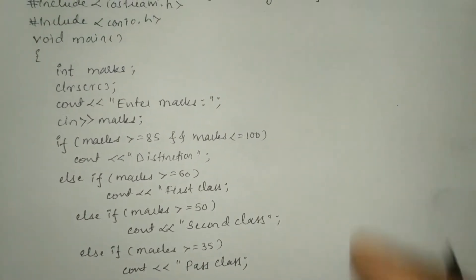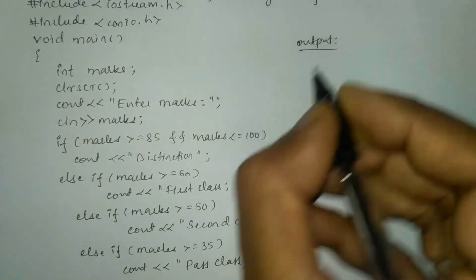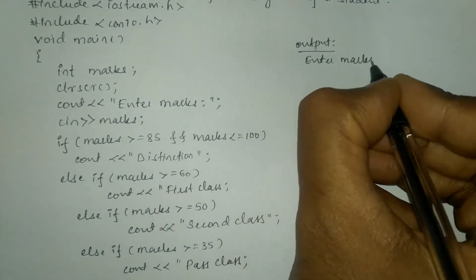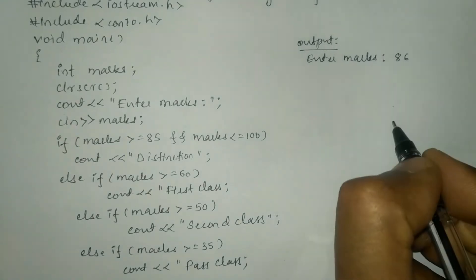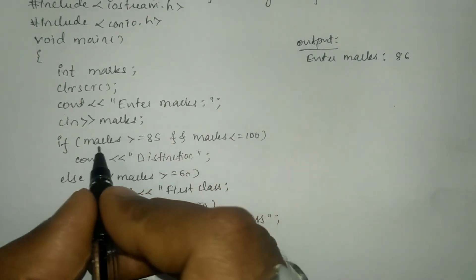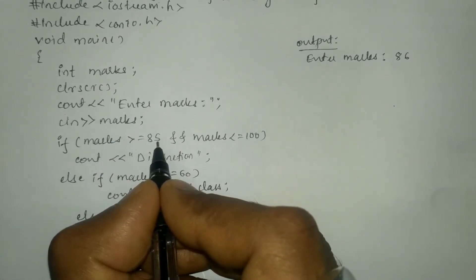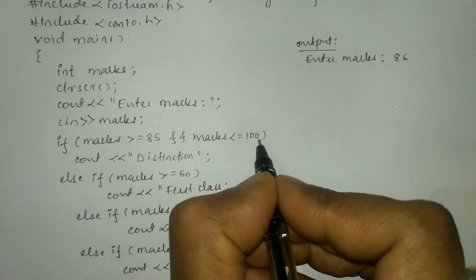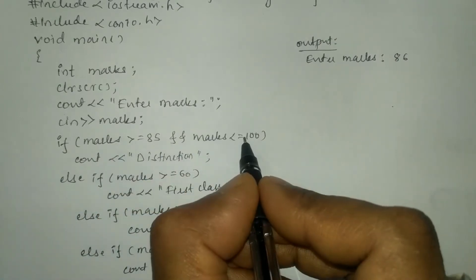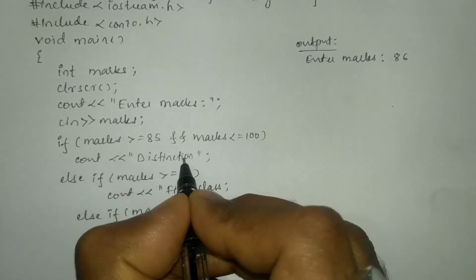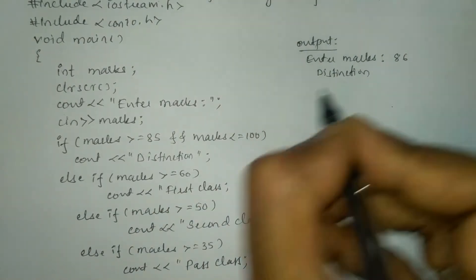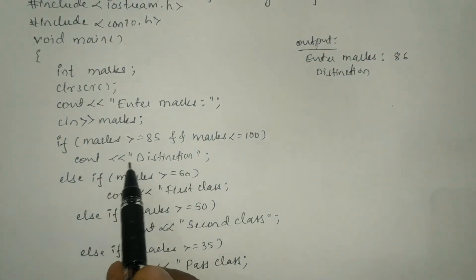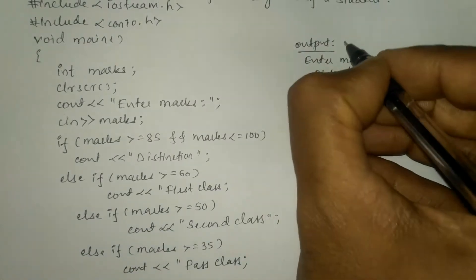Let us take an example. Once we compile and run this program it will ask the user to enter marks. For example, I am going to enter 86. So 86 is stored in marks. 86 is greater than or equal to 85 — yes, true. Marks 86 is less than or equal to 100 — yes, true. True AND true is always true, hence it is going to print 'distinction'. The control then comes out of the if-else statement and the program terminates. This is Run 1.